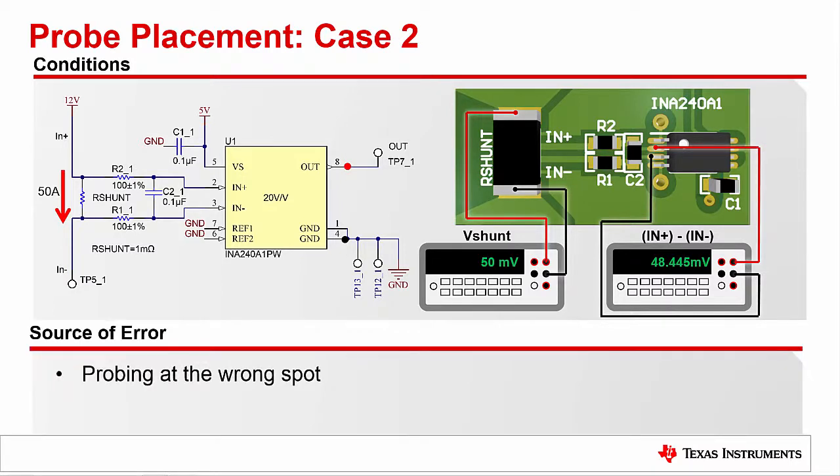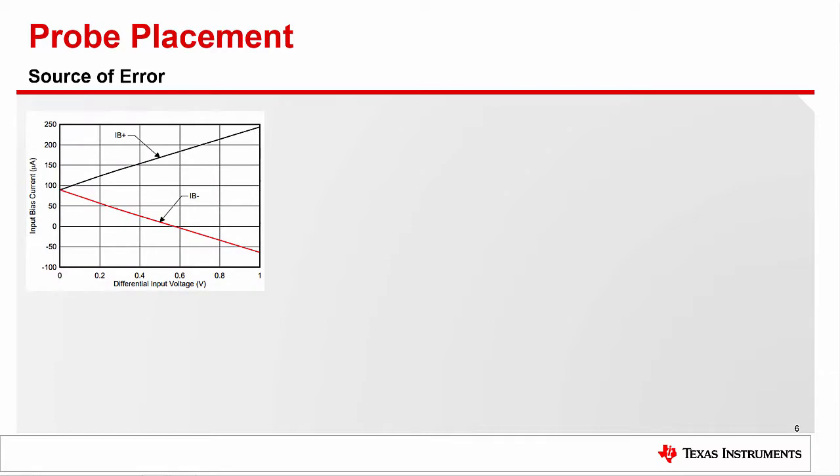We now have determined the source of our error to be the filter, but why? Recalling from our layout video that trace symmetry can influence measurement error due to input bias current, we turned back to the schematic and realized that while our traces are symmetric, the filter resistors may not be. The tolerances are 1% on 100 ohm resistors.